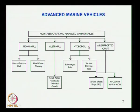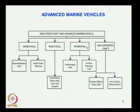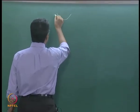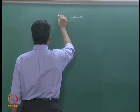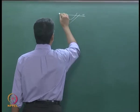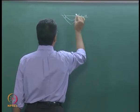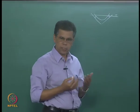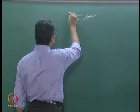Then we have the hydrofoils — using a foil beneath the hull of the vessel, usually small craft. There are two types of foils used: one is a surface piercing foil and the other one is a submerged foil. If you consider a vessel cross-section view, one type of foil system is connected to the vessel — this foil is surface piercing, which means the surface is coming out of the vessel.